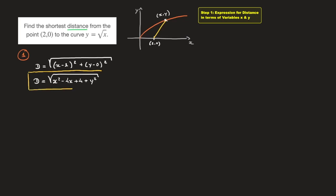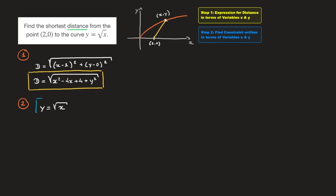We move on to step two, where we need to find the constraint written in terms of the same variables x and y. The constraint is the limitation: we're trying to make the distance as short as possible, but the point has to lie on the curve y equals to the square root of x. So we write the constraint as y must equal the square root of x. That's the second step done.